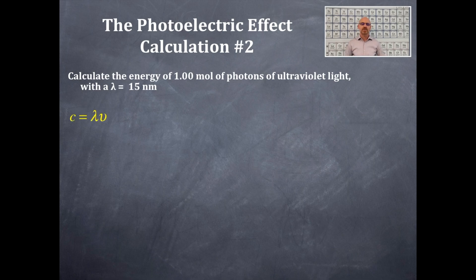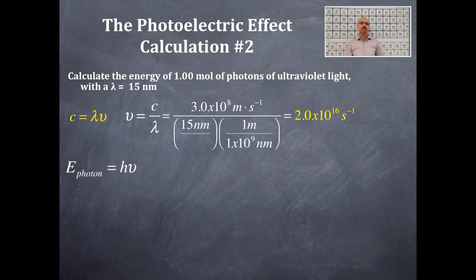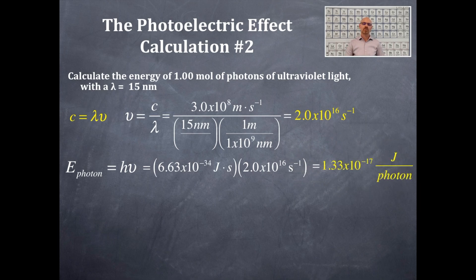Using c = λν, we plug in our numbers, rearrange, and cancel out nanometers and meters to get per second. The frequency of 15 nm UV light is 2.0×10¹⁶ per second. Using E = hν with Planck's constant and that frequency, the seconds cancel out and we get 1.33×10⁻¹⁷ joules per photon.